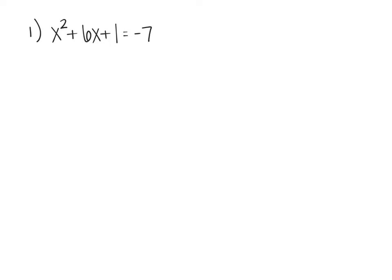So I've got an example, x squared plus 6x plus 1 equals negative 7. If you remember back to class, we've got this idea of a zero product property, which says if you have two things equal to zero, you can set each piece equal to zero.